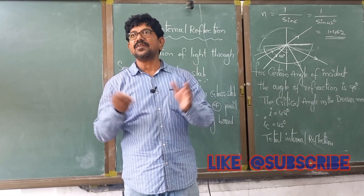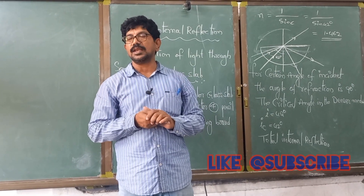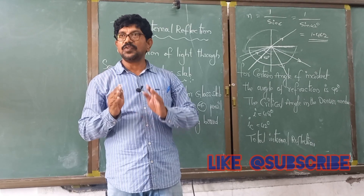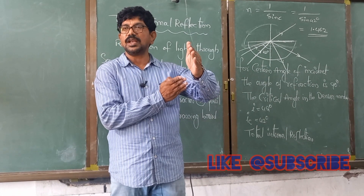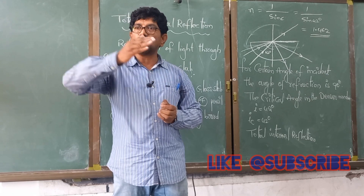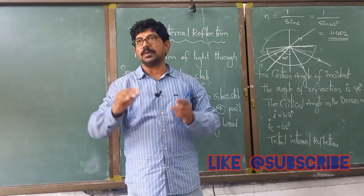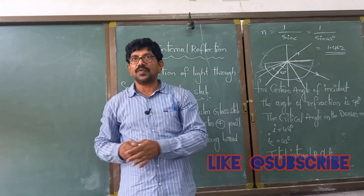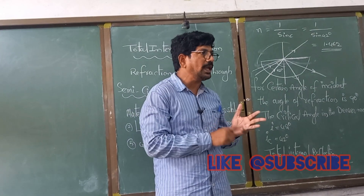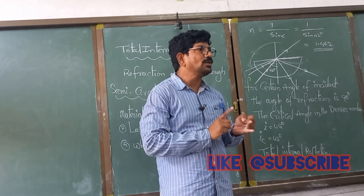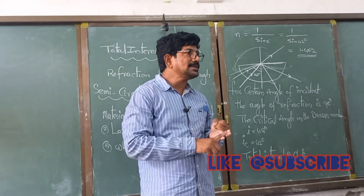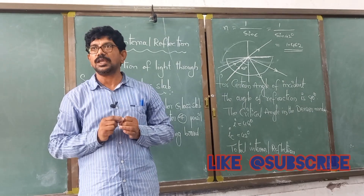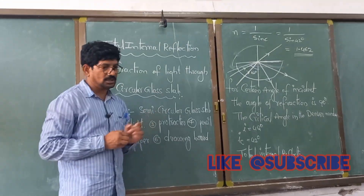With this experiment we find what total internal reflection is. For a certain angle of incidence, the angle of refraction is 90 degrees. If you go on increasing the angle of incidence, the refracted ray does not go into the rarer medium — it gets reflected into the same denser medium. For total internal reflection to take place, the light ray has to travel from denser to rarer medium. Thank you.